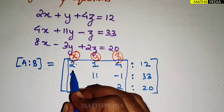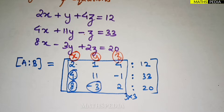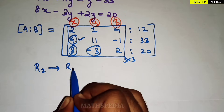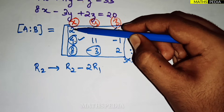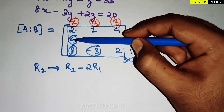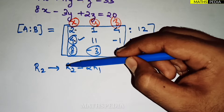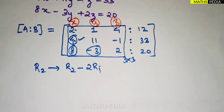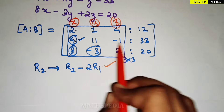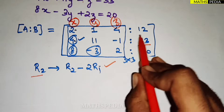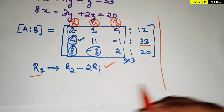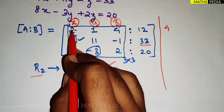So I have to make elements 4, 8, and minus 3 equal to zero using row operations. We'll start with the element 4. We can apply R2 = R2 minus 2*R1, because 2 times 2 is 4, so subtracting makes it 0. After applying this transformation, only the second row will change. You have to consider the whole row including the constant term when applying row operations.